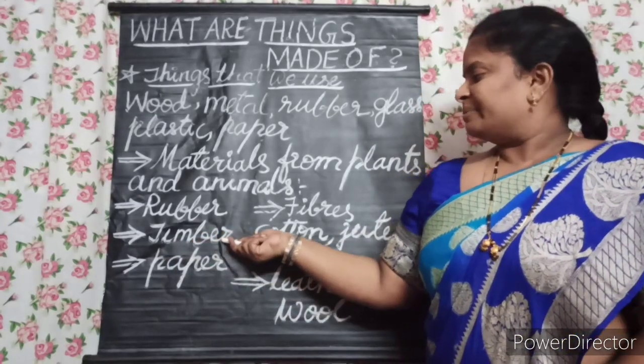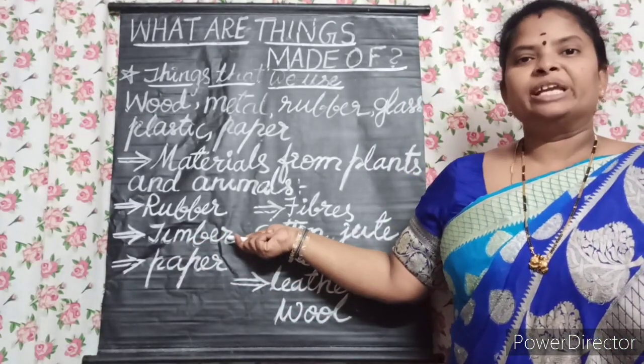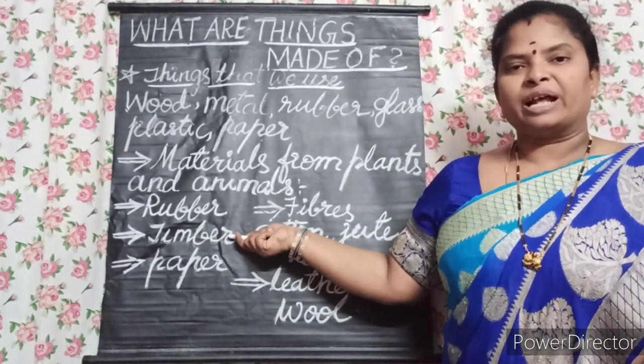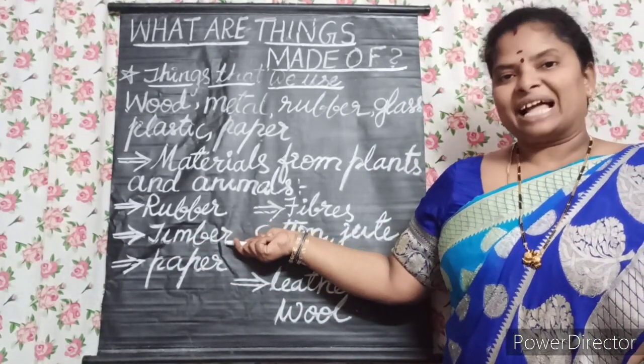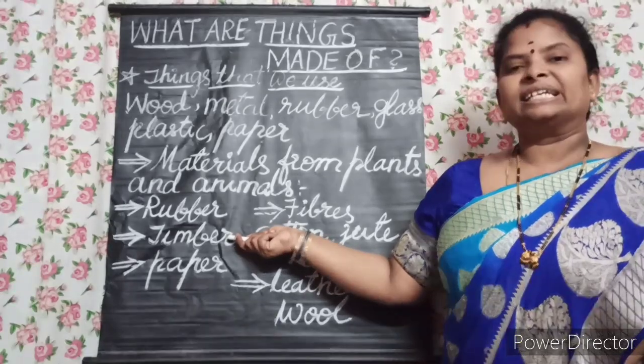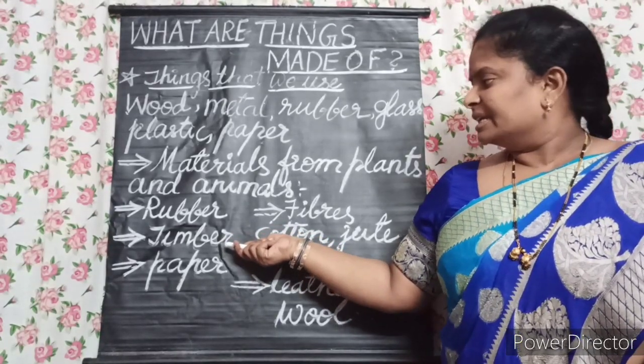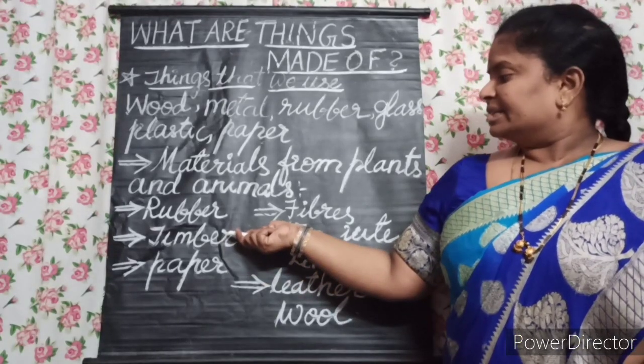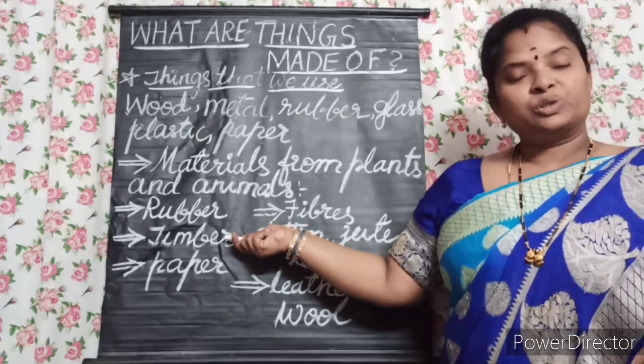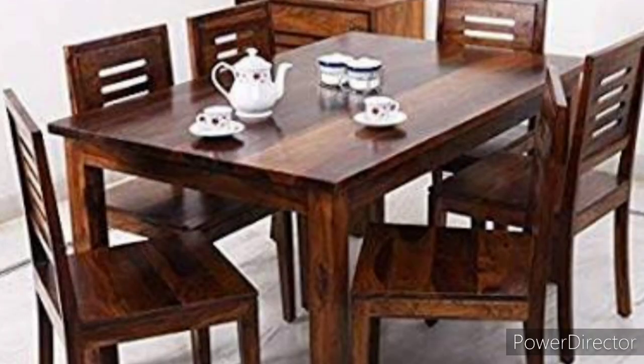Now let us see timber. Timber means wood. We get wood from plants like teak and sal. Wood is used to make furniture like tables, chairs, doors, and windows.